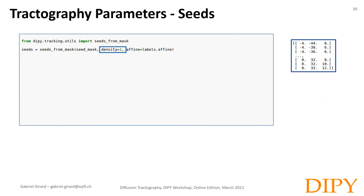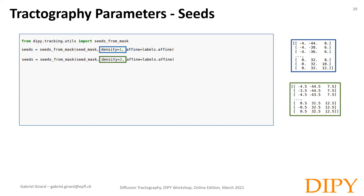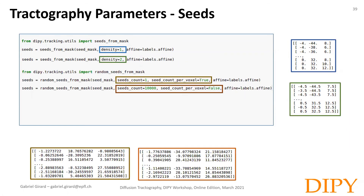Another thing to consider is where you want to initiate tractography and how many seeds you want. The seed from mask function will place seeds in all voxels of the mask. With density 1, the seed will be placed at the center of the voxel. With density 2, the seed will be placed on a 2x2x2 grid, generating 8 seeds per voxel. With density 3, seeds will be placed on a 3x3x3 grid, forming 27 seeds per voxel. With the random seed from mask, seeds are placed randomly within the voxel boundary — you can either generate n seeds per voxel or n seeds total for the whole seed mask.